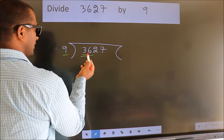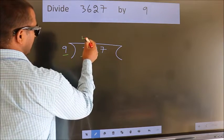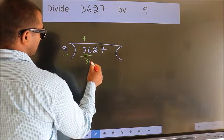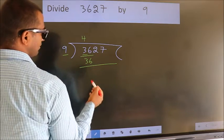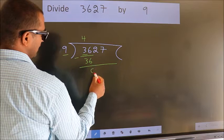When do we get 36? In the 9 table, 9 times 4 is 36. Now, we should subtract. We get 0.